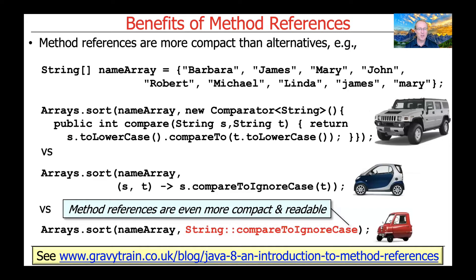Let's take a quick look and compare and contrast what we've looked at so far. Recall the earlier example we discussed when covering Lambda expressions — we had an array of strings with the names of people in it, and we looked at two different ways to sort that array of strings. One using the classic form with anonymous inner classes, which is very verbose. One that used Lambda expressions, which is more concise. And then the third form uses method references, which are even more compact and readable than Lambda expressions.